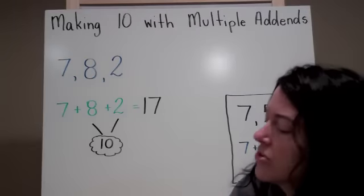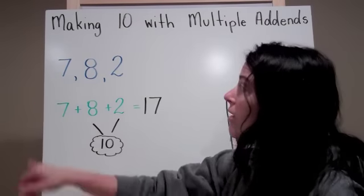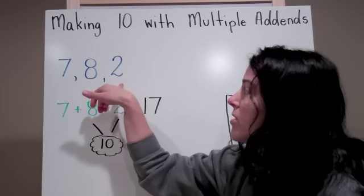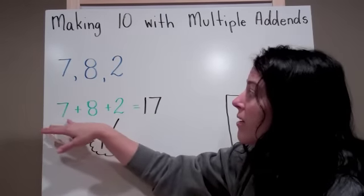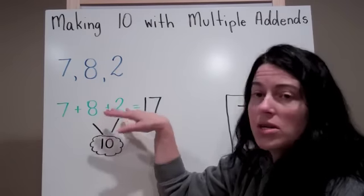So here's a problem for us to practice together. I have the following 3 addends: 7, 8, and 2. The first thing I'm going to do is write my addition sentence: 7 plus 8 plus 2 equals.